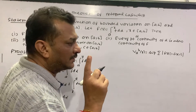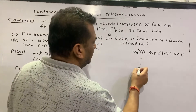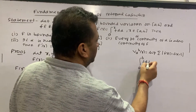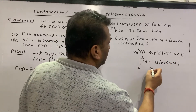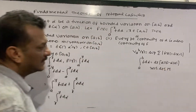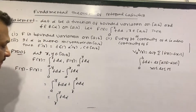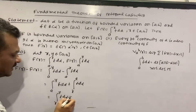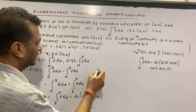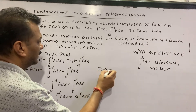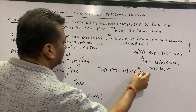Now I use the First Mean Value Theorem of the Riemann-Stieltjes integral, which is extremely useful. The integral from a to b of f dα equals μ times [α(b) minus α(a)], where μ lies between the infimum m and supremum M of f. Applying this theorem, I have: F(y) minus F(x) equals μ times [α(y) minus α(x)], where μ is some value between the bounds of f.